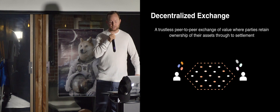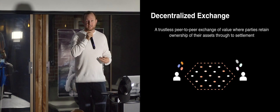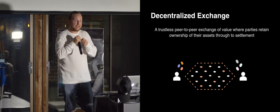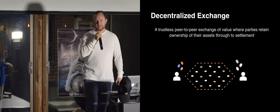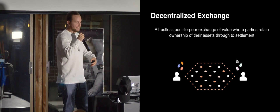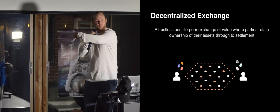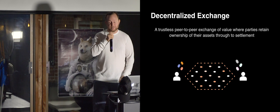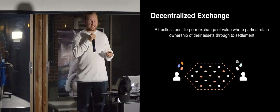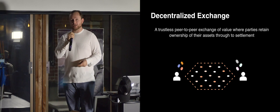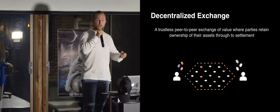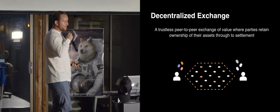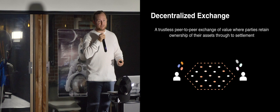So enter decentralized exchange. The way we define it at 0x is a trustless peer-to-peer exchange of value where parties retain ownership of their assets through to settlement. Breaking this down: it's trustless because I'm trading directly with my counterparty and there's no trusted intermediary. Because it's peer-to-peer, it's incredibly difficult to censor. And because the logic is baked into a publicly available smart contract, it's completely transparent — anybody can audit this. So we've created a system that is trustless, censorship-resistant, and transparent.